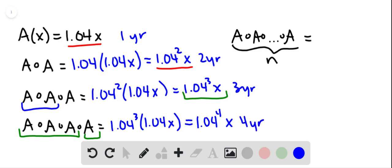Now how about n years? If you compose this function n times, it's not multiplying the function, it's composing the function n times, you'll end up with following the pattern 1.04 to the n power times x.